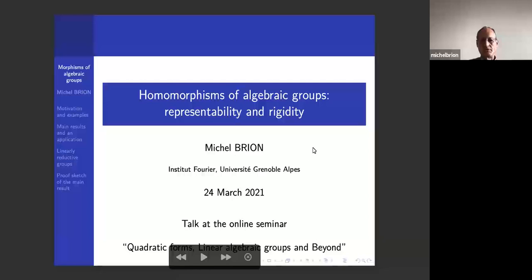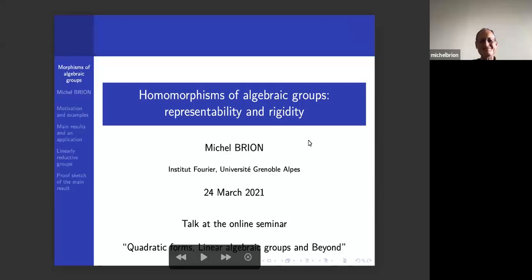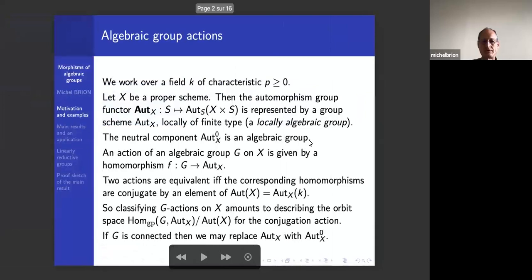I should warn you that this is my second talk online and the first one was extremely bad, really very bad, so I hope this one will be a little bit improved. Anyway, let me start with some motivational examples. The motivation comes from the classification of group actions — actions of a given algebraic group on a given proper scheme.